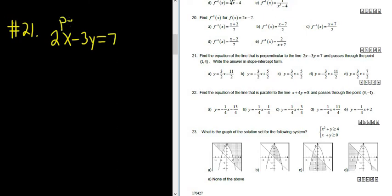So our line has to be perpendicular to this line, and that passes through the point 1, 4. Write the answer in slope-intercept form.